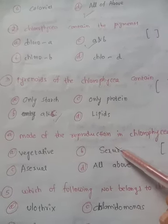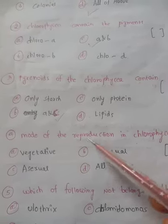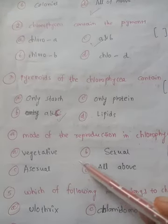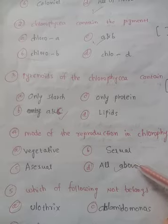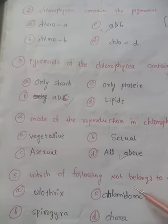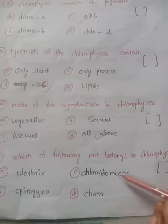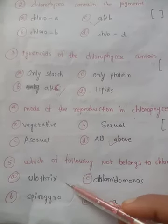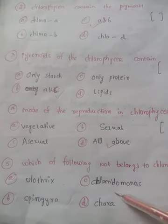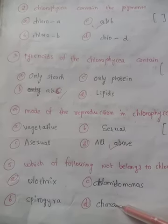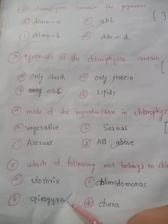Mode of reproduction in Chlorophyceae: vegetative, asexual, sexual — D, all of the above, is the correct answer. Which of the following does not belong to Chlorophyceae? Ulothrix, Spirogyra, Chlamydomonas, Chara. Yes — Spirogyra.